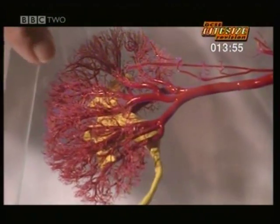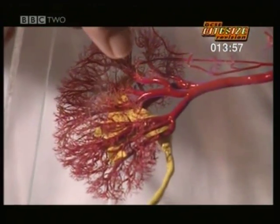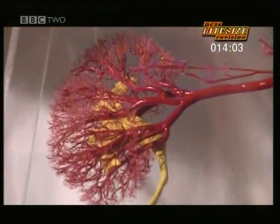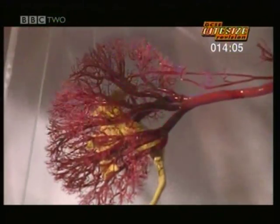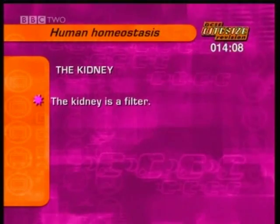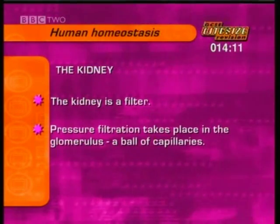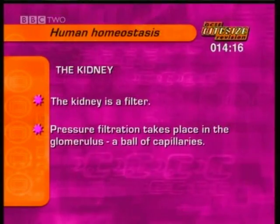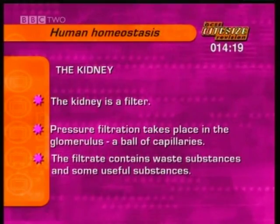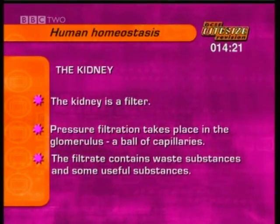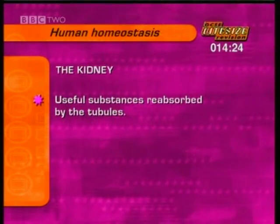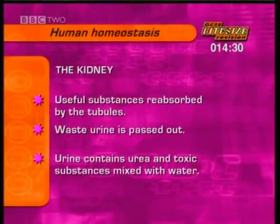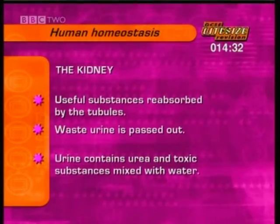Urine is produced. It's then concentrated down microscopic tubules until it gets to that part there — the yellow part — and then the urine passes down the ureter. The kidney acts as a special filter. Pressure filtration takes place in the glomerulus, a coiled-up ball of capillaries. The filtrate contains waste substances as well as some useful substances. Any useful substances are reabsorbed as the filtrate passes down the tubules. Only urine is passed out, which contains urea and toxic substances mixed in with some water.